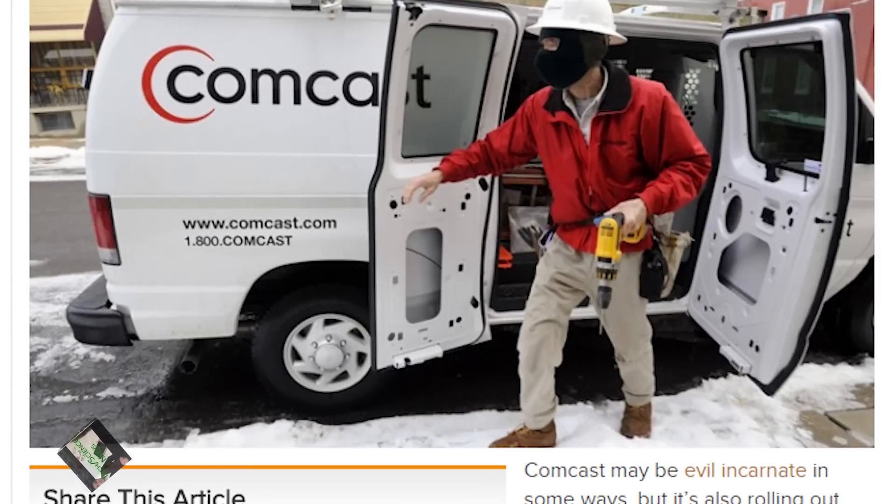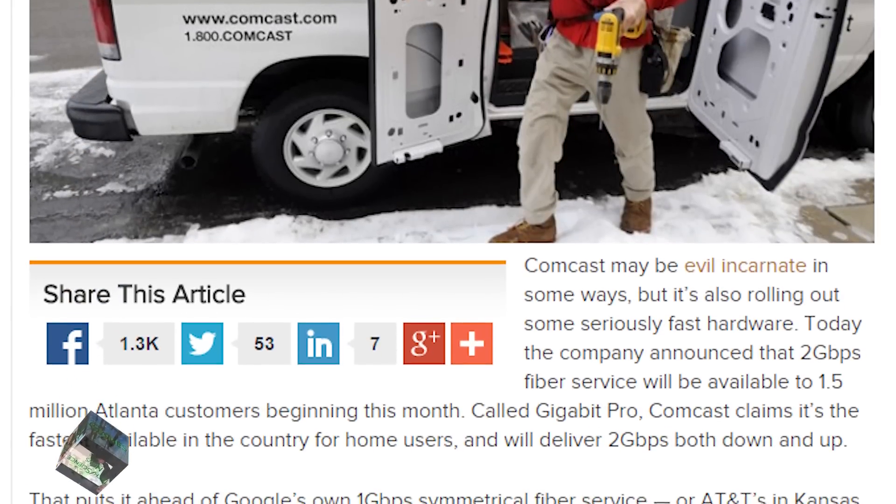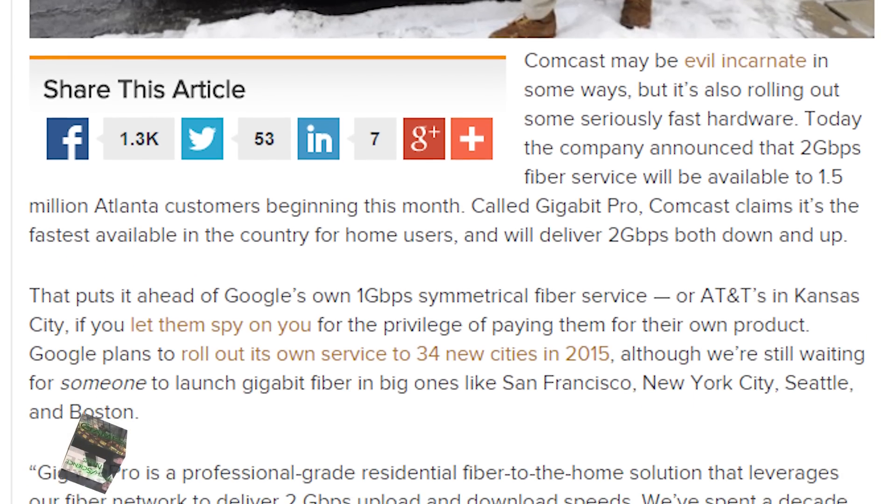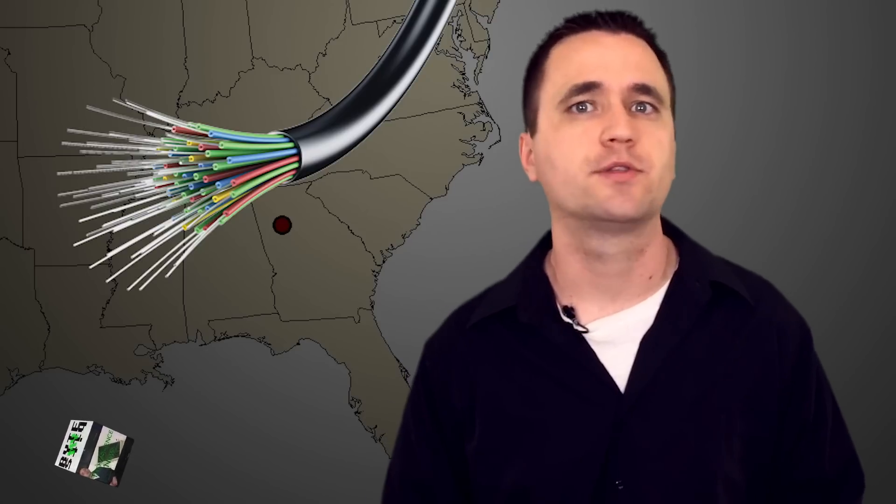Comcast is trying to stay in the game by offering 2Gbps symmetrical internet service, which is 2Gbps both ways, but it's only to their prime customers in Google Fiber areas. Launching in Atlanta, they claim that their new service dubbed Gigabit Pro is available to 1.5 million customers. Comcast has said that they have spent a decade building their fiber networks, and now the only hurdle is getting people to actually want Comcast.